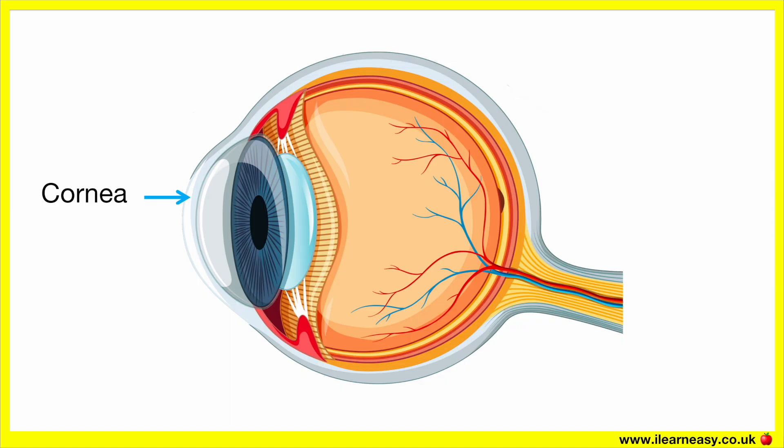Cornea. The cornea is the clear curved front surface of the eye. This is the first part that light hits. The cornea bends light to help focus it — this is known as refraction. The cornea also acts as a protective outer layer.